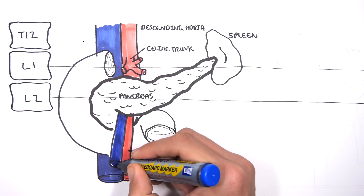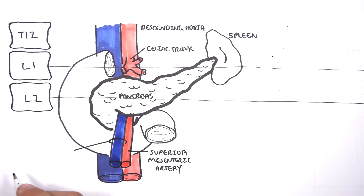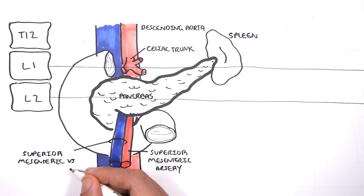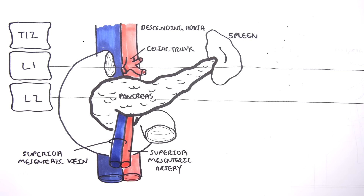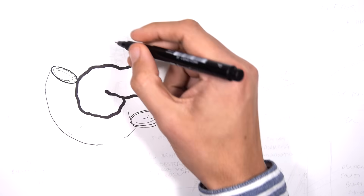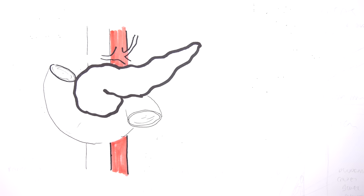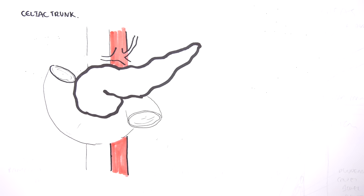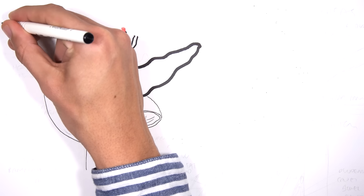Adjacent to the superior mesenteric artery is the superior mesenteric vein, which also runs behind the pancreas but does not drain into the inferior vena cava. The celiac trunk branches at T12–L1 and has three main branches.